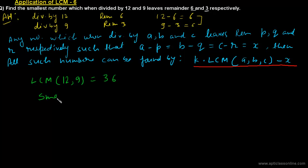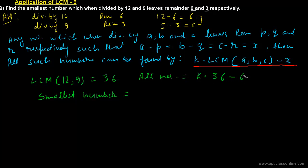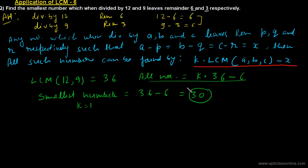For the smallest number, we put k equal to 1. So all numbers satisfying this condition are multiples of 36 minus 6. For the smallest number, that gives us 36 minus 6, which is 30. If you divide 30 by 12, the remainder is 6, and if you divide 30 by 9, the remainder is 3.